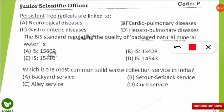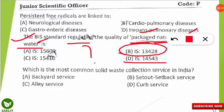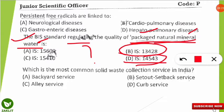The next question is very tricky: what is the BIS standard regulating the quality of packaged natural mineral water? The correct option is B — IS 13428. However, note that IS 14543 is given for packaged mineral water (without 'natural'). Where 'natural' is mentioned, use IS 13428; where it is not mentioned, use IS 14543. Note this minor but important difference.